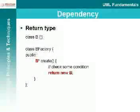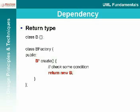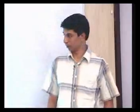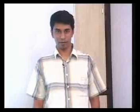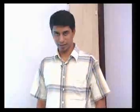The last form of dependency is return type. If you were to write a factory, a factory would not inherit the class it creates or contain the instance — rather, the factory keeps creating and returning many instances. So whenever a method has a return type of another class type, you look at this as dependency.